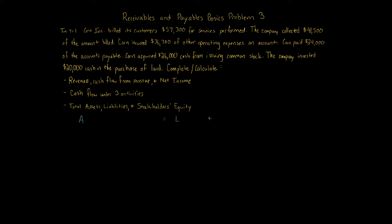Specifically, it's a corporation, so stockholders' equity. Let's go through each transaction. We've got cash, accounts receivable, and land in terms of our assets. For liabilities, we have accounts payable. And then for equity — specifically stockholders' equity — we have common stock and retained earnings. Equity follows the WIRE mnemonic: the I goes to common stock, and the W (withdrawals), R (revenues), and expenses go to retained earnings.